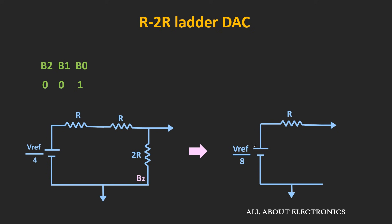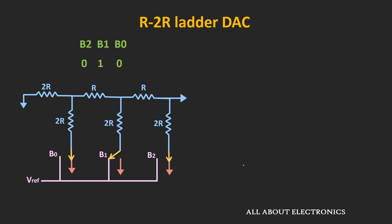So for this 3-bit ladder network, whenever only bit B0 is 1, the output equals V_reference divided by 8. Similarly, let us find the output whenever bit B1 is 1 and the remaining bits are 0.